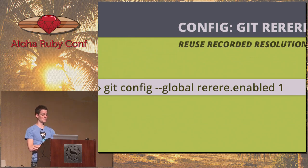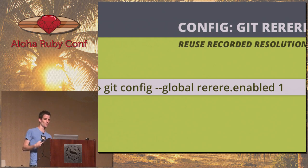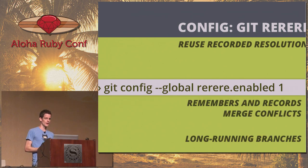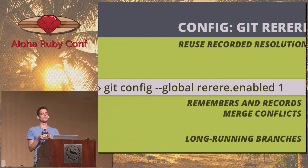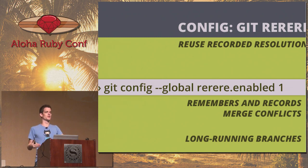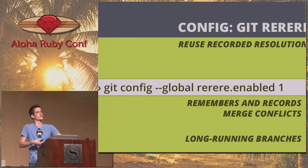Git rerere — reuse recorded resolution — is hilarious to say. It's one of those things that's really nice in weird circumstances. If you turn on rerere.enabled = 1, it basically remembers merge conflicts. This is beneficial on a really long-running project where you're continuously merging back and forth. If you resolve conflicts, git won't necessarily remember those resolutions next time. Rerere will remember your actions on a particular merge conflict so you won't have to do that again in the future.